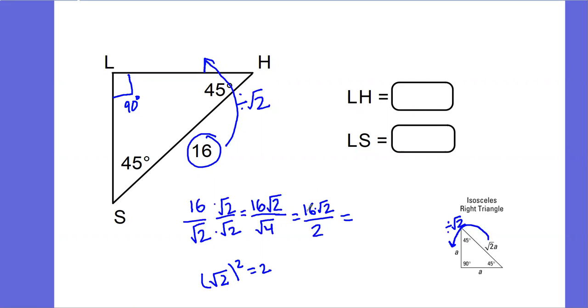And 16 divided by 2 is just 8. So my final answer is going to be 8 root 2. And because my sides that are across my 45s are congruent, not only do I know that LH is 8 root 2.